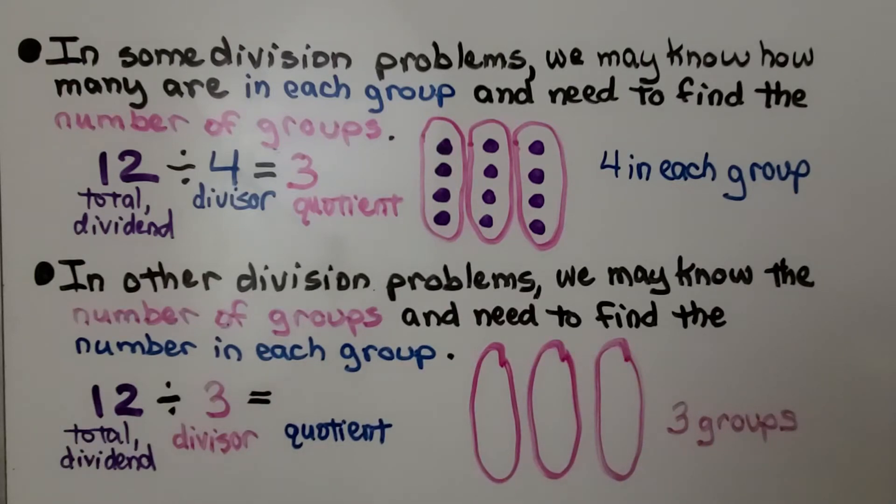But in other division problems we may know the number of groups, and now that's our divisor, and we need to find the number in each group. In that case we don't draw the total first. We draw the groups and we fill them evenly until we have 12.